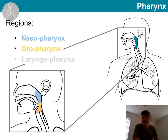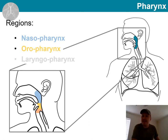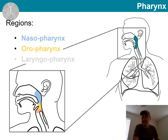Let's have a look at the oropharynx. This space runs posterior to the oral cavity, from the level of the soft palate to the epiglottis. Palatine tonsils are located here, as well as lingual tonsils.